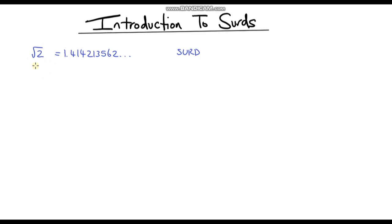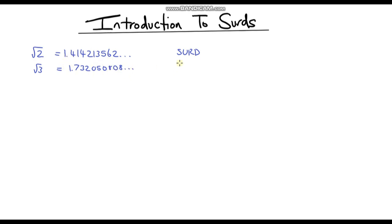Let me give you another example. Let's say we had the square root of 3. Let's type this into a calculator. The square root of 3 gives us 1.732050808... and just like the one above, this keeps going on and on forever. Because we can't write this as a fraction, this is also a surd. So the square root of 2 and the square root of 3 are both surds.